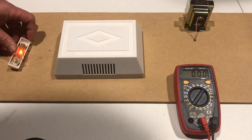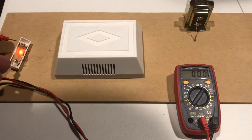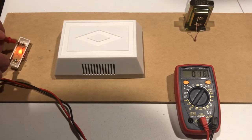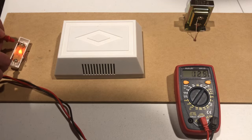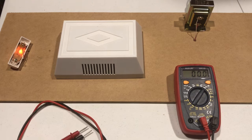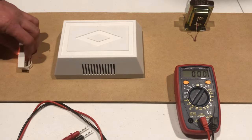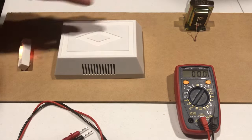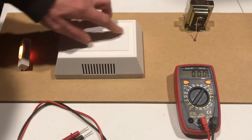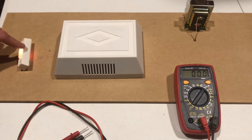Now we're going to test it at the doorbell, and we're going to see what we get here. So we're getting 20.6. Now, there's going to be a slight loss from the transformer, going to the chime, going to the doorbell.